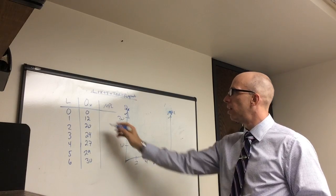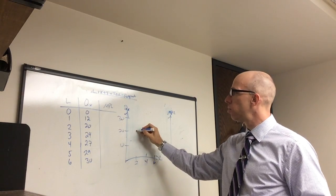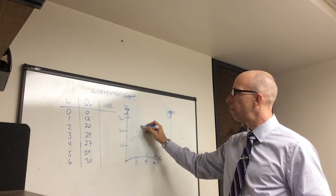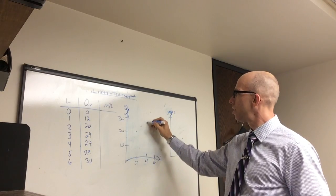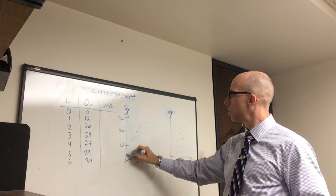Here's 0, 0. Here's 1, 12. 2, 20. 3, 24. 4, 27. 5, 29. 6, 30.